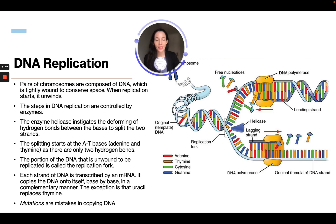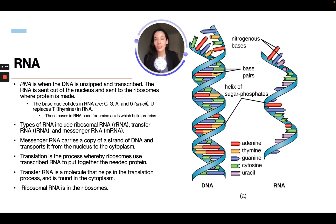The exception is that uracil replaces thymine. Mutations are mistakes in copying DNA. In RNA, the DNA is unzipped and transcribed. The RNA is sent out of the nucleus to the ribosomes, where proteins are made. The base nucleotides in RNA are C, G, A, and uracil. Uracil replaces thymine in RNA because when it transcribes over, thymine is replaced by uracil. These bases in RNA code for amino acids, which build proteins.